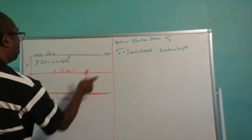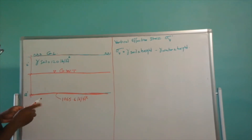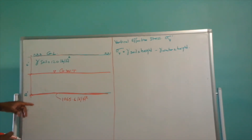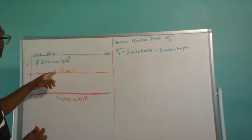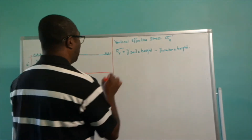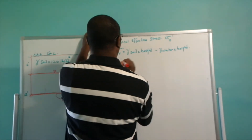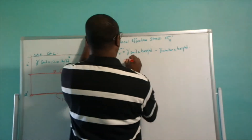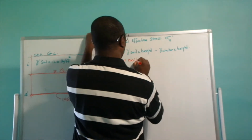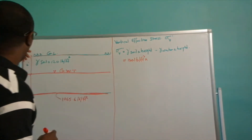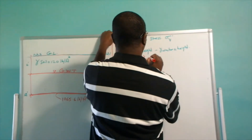If you look at this diagram, it represents a soil profile at a depth of 12 feet. The height of our water table is 6 feet and the weight of the soil is 120 pounds per cubic feet. So the weight of the soil is 120 pounds per cubic feet times the depth of the soil, which is 12 feet.